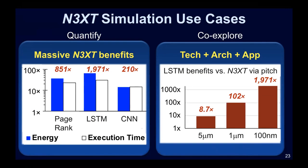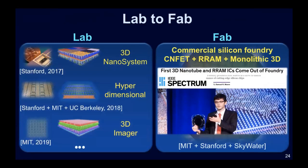For a very long time we have been building hardware prototypes in the lab — for example, the three-dimensional nanosystem, and at ISSCC 2018 we demonstrated hyperdimensional computing, a computational model for machine learning. The question had always been: would this work in a real fab? I'm very proud to say that carbon nanotube FETs, resistive RAM, and monolithic 3D are all working today in a commercial silicon foundry, thanks to the DARPA 3D SOC program. This is collaborative work between MIT, Stanford, and Skywater Technology Foundry.